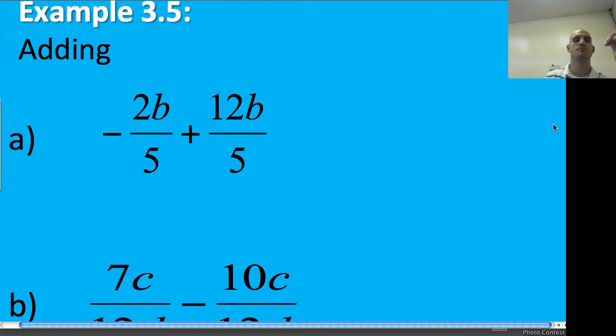One more example. Negative 2B over 5 plus 12B over 5. I'm adding fractions once again. Keep that common denominator of 5. And then I have negative 2B plus 12B is going to give me, once again, two opposite signs, integer operations. So 12B minus 2B. Subtract the easy way. Keep the sign of that larger absolute value.